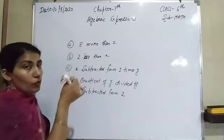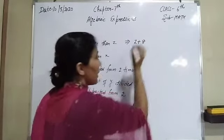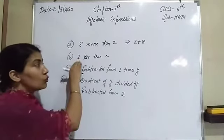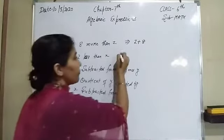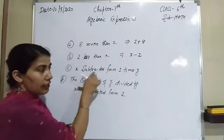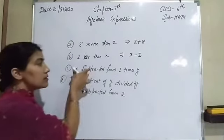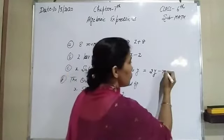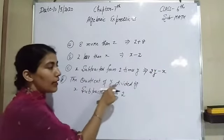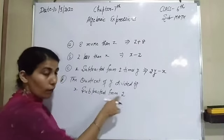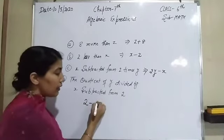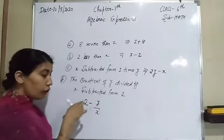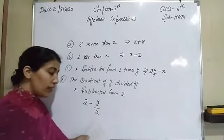Eight more than z means z plus 8. Two less than x means x minus 2. X subtracted from two times y means 2y minus x. The quotient of y divided by x, subtracted from 2, gives us the required algebraic expression. Now come to the next question of this worksheet.